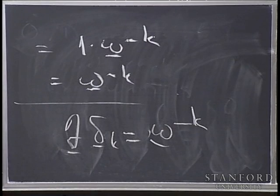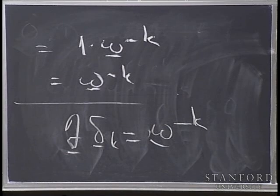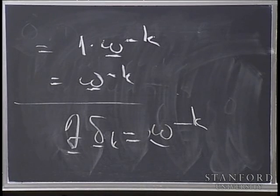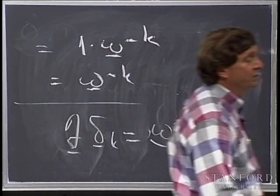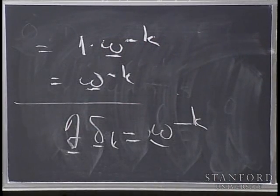The Fourier transform of the shifted delta function is omega to the minus k. That's exactly analogous to the continuous case, where the Fourier transform of the shifted delta function is e to the minus 2 pi i s t. It's the same result — your intuition carries over from the continuous case to the discrete case with the appropriate choice of notation.